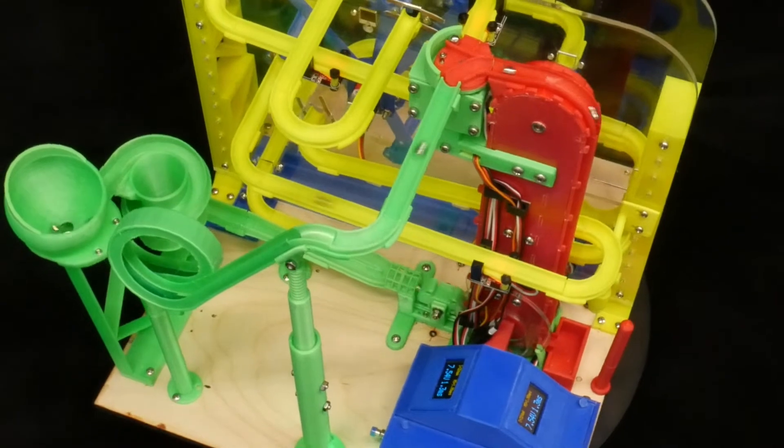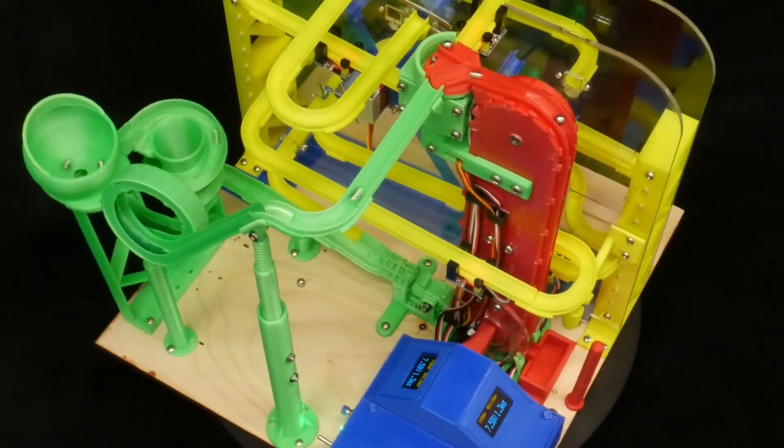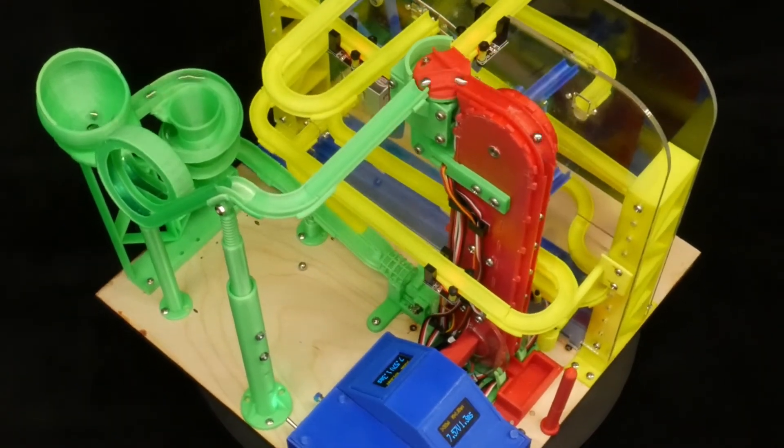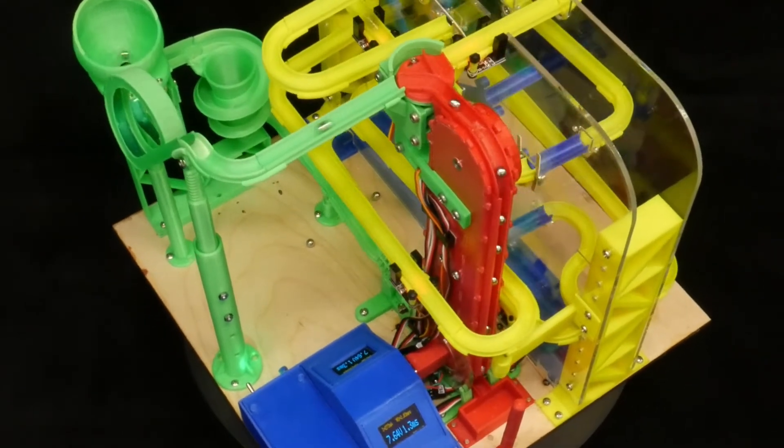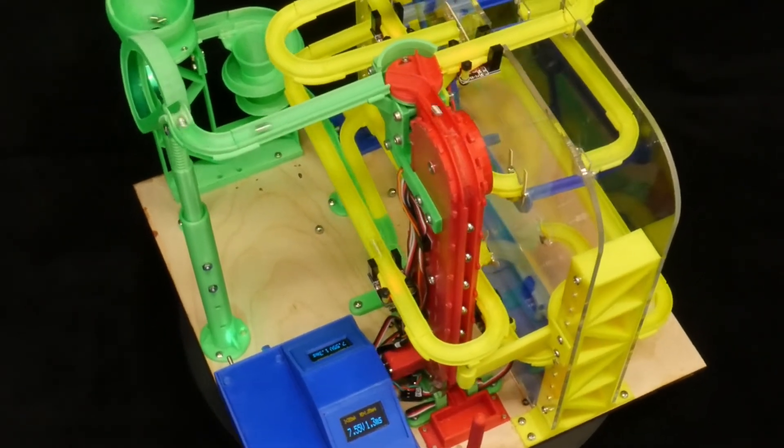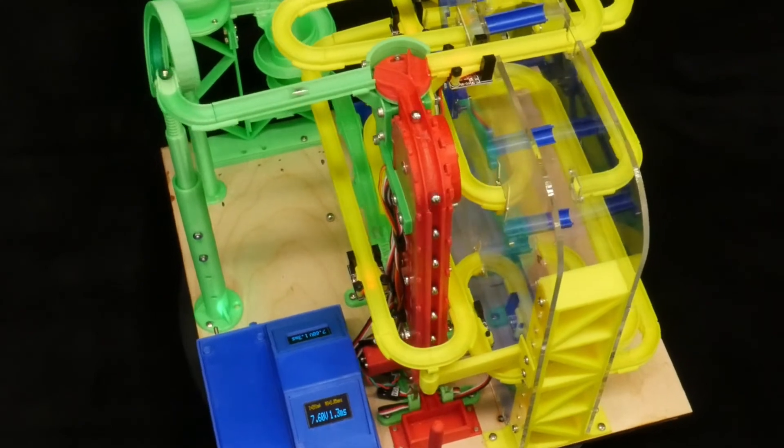The main parts of the machine are the magnetic elevator in red, the green track, and the yellow track. An Arduino compatible microcontroller is housed in the blue box.